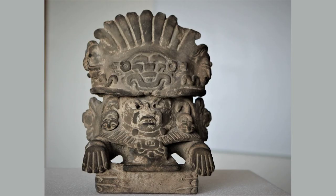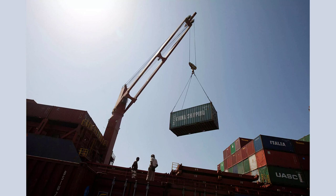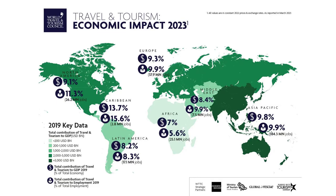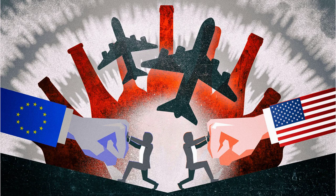Welcome back, history enthusiasts. Today, we embark on a fascinating exploration of one of the most significant economic conflicts of our time, the US-China trade war. Over the past decade, tensions between these two economic powerhouses have escalated, resulting in a series of trade disputes, tariffs, and retaliatory measures. This conflict has not only impacted the economies of both nations, but has also sent shockwaves throughout the global market. In this video, we will delve into the origins of this trade war, examining the key events, policies, and motivations that have shaped this ongoing battle for economic supremacy. So, grab your popcorn and get ready to dive into the captivating history of the US-China trade war.